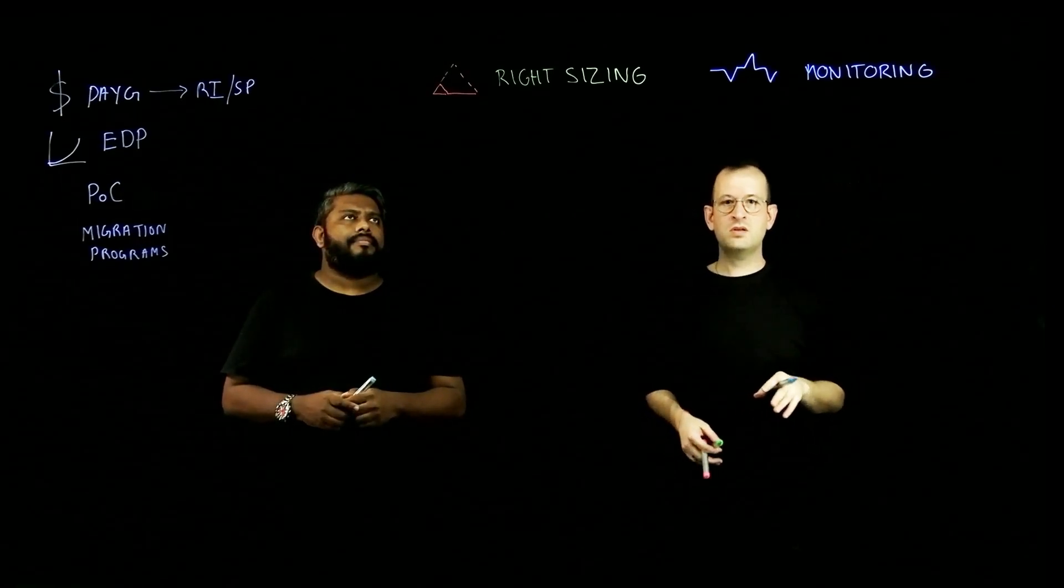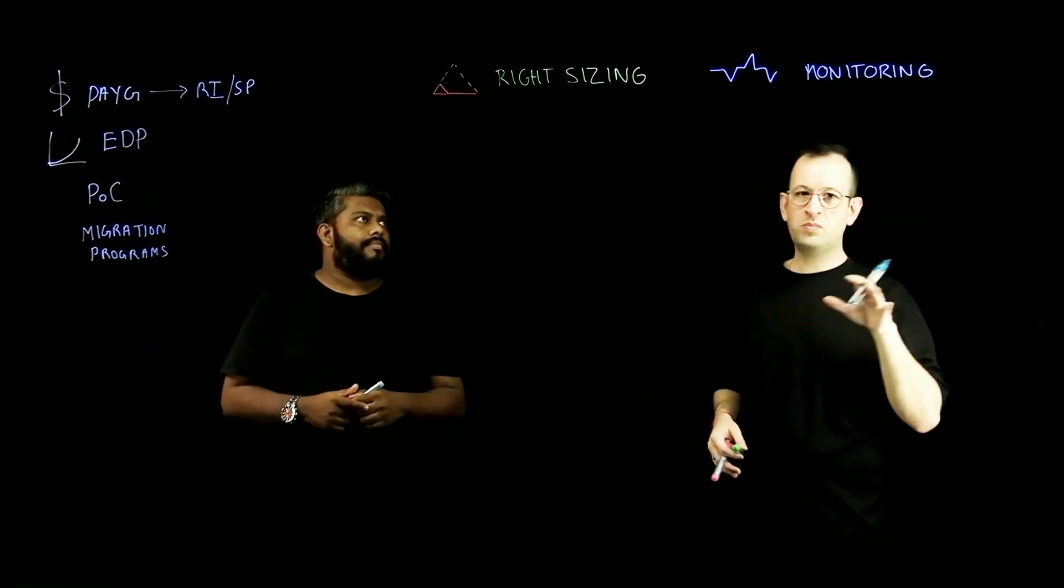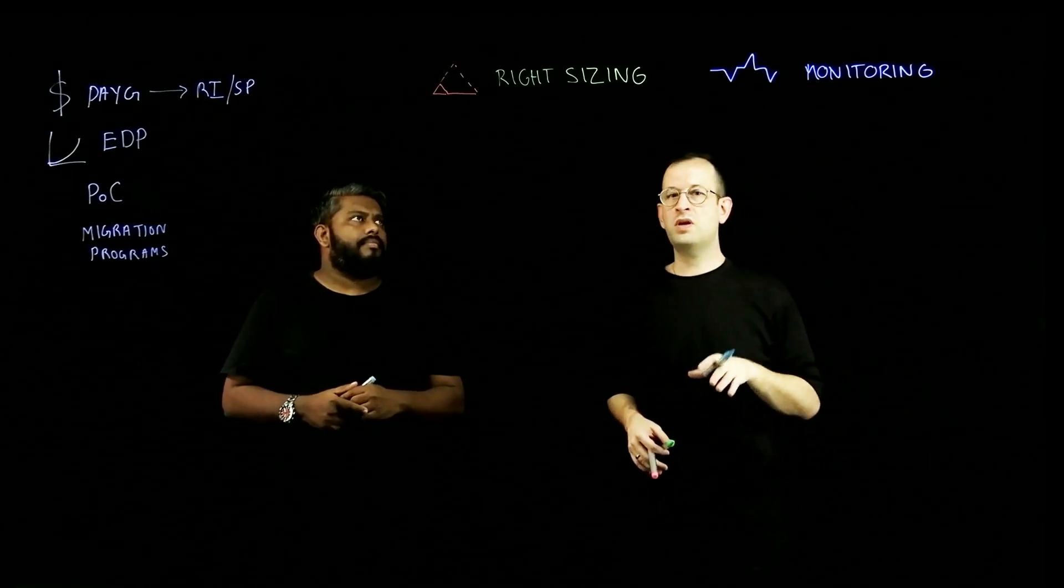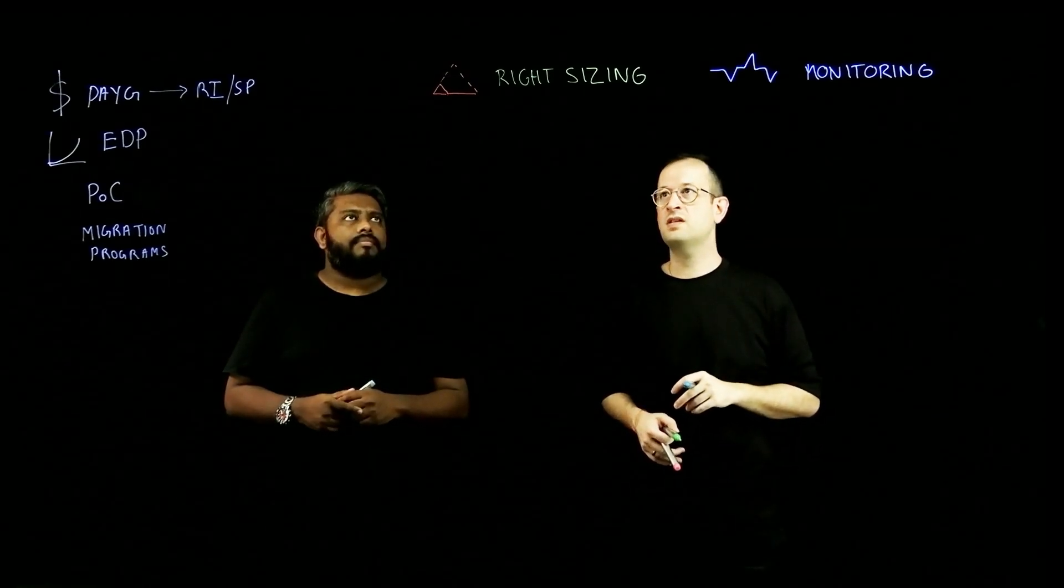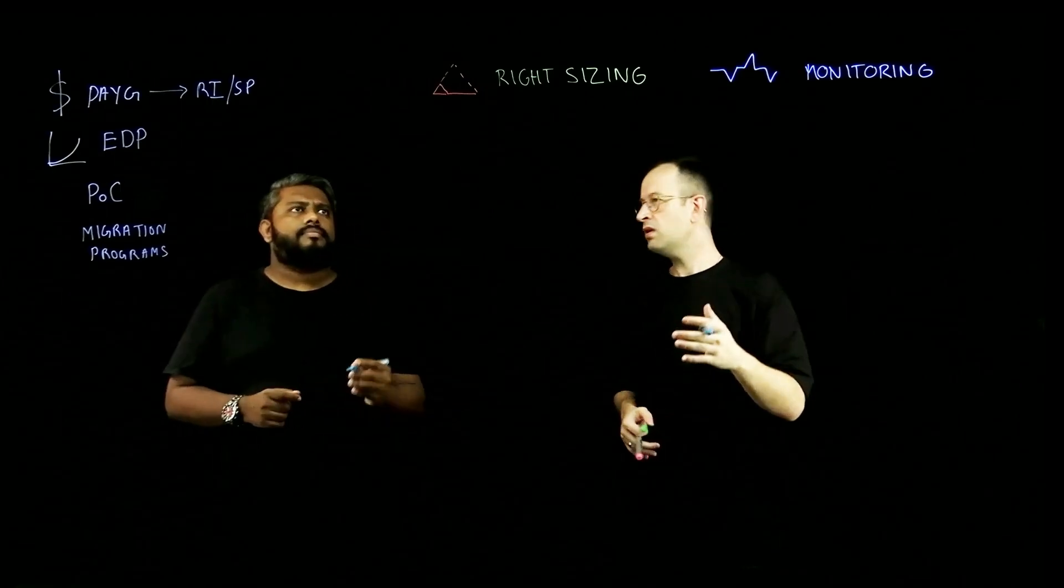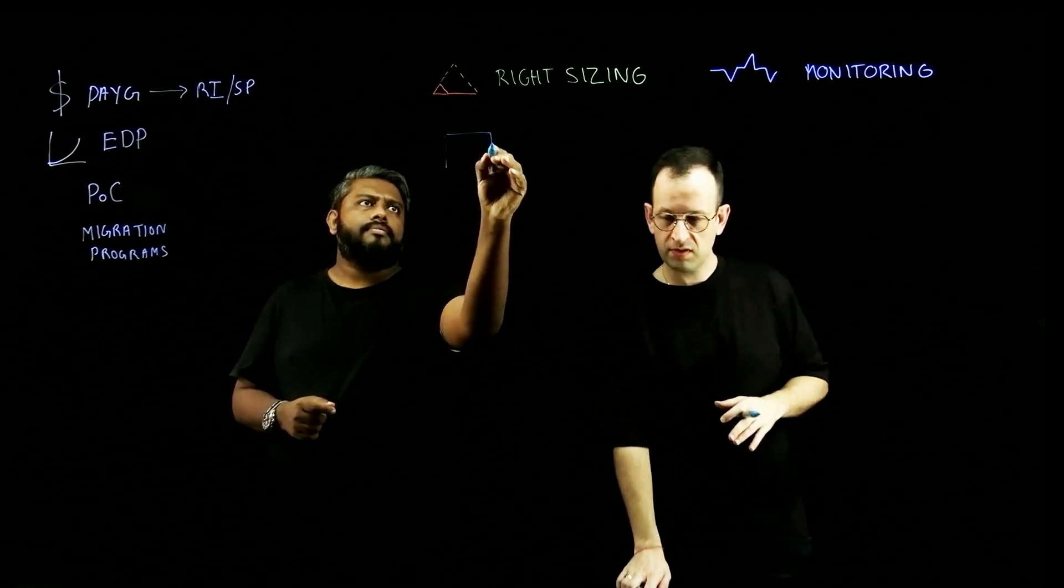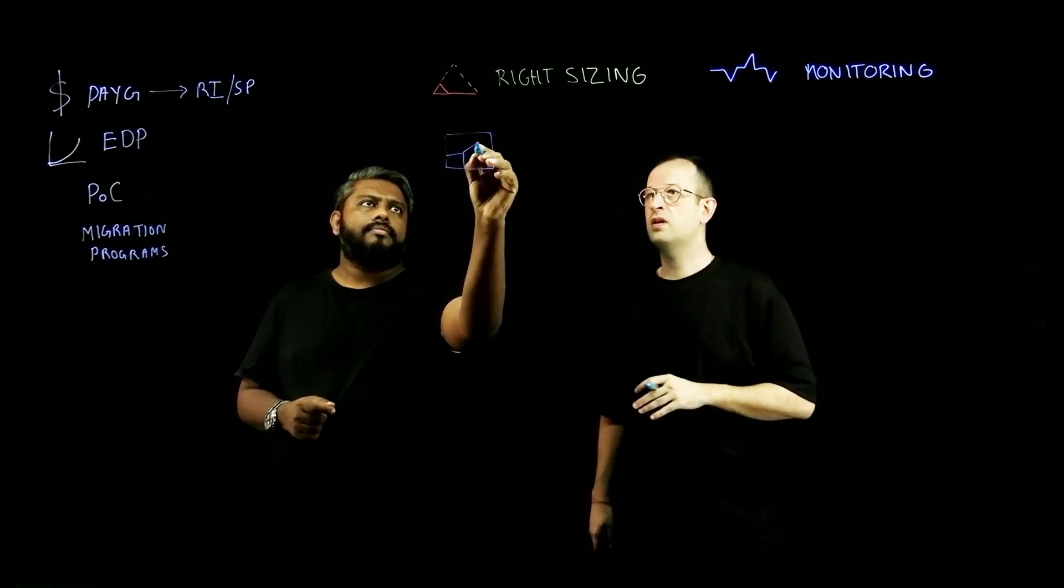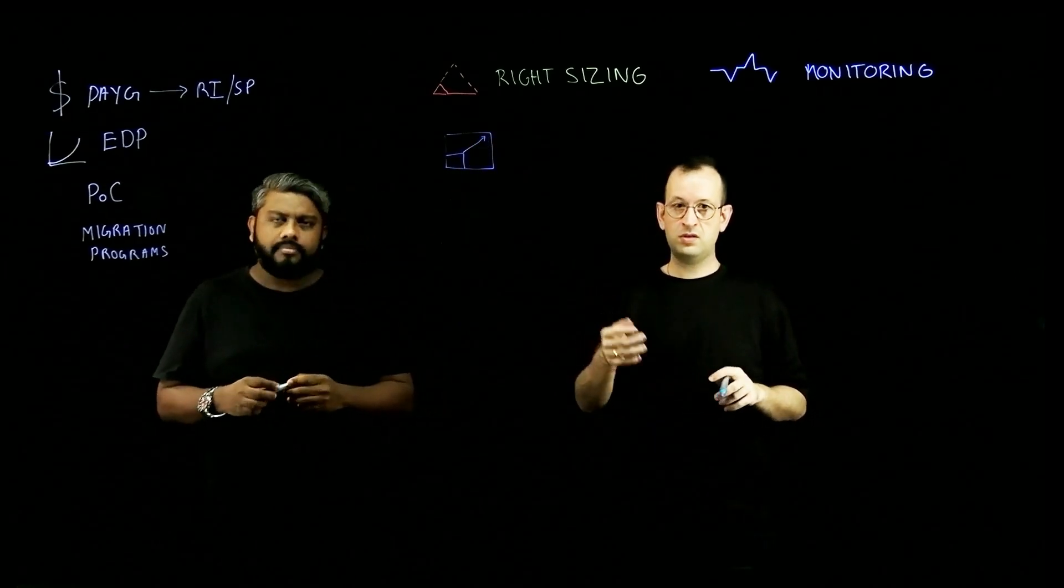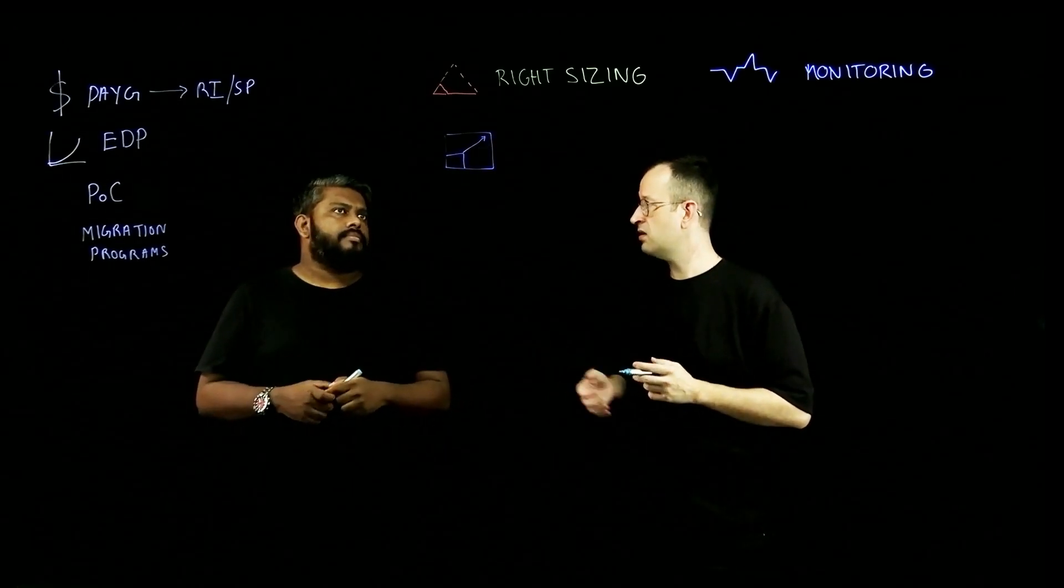Right. So this is leveraging the monitoring stack out of the box present in ROSA to help you gather some of these insights. Now, technically speaking, the way you manage your worker nodes is going to be through machine pools. These machine pools are going to help you, for example, to auto scale your worker nodes.